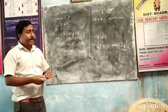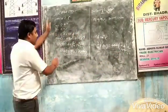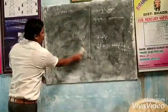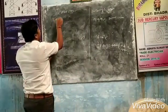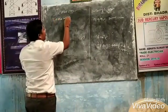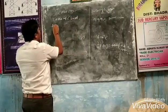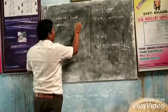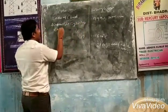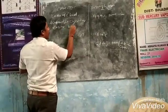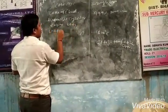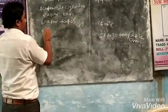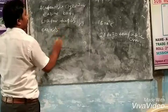Cast iron is used in lathe machine parts, automobile cylinders, engine boxes, water taps, and engines.